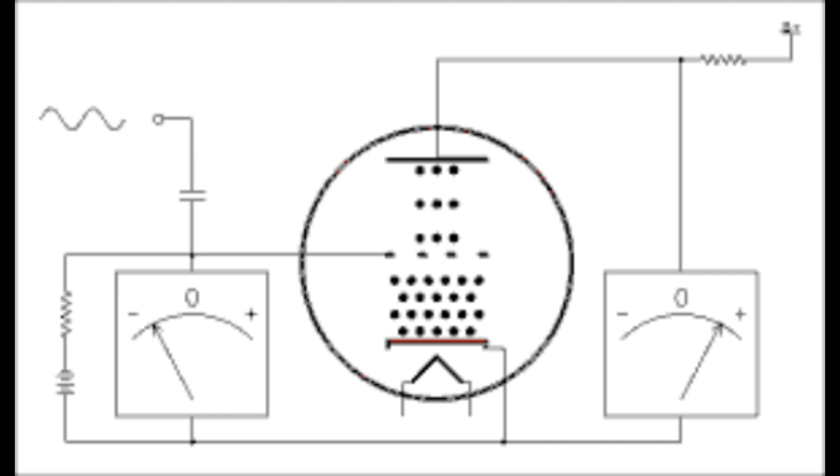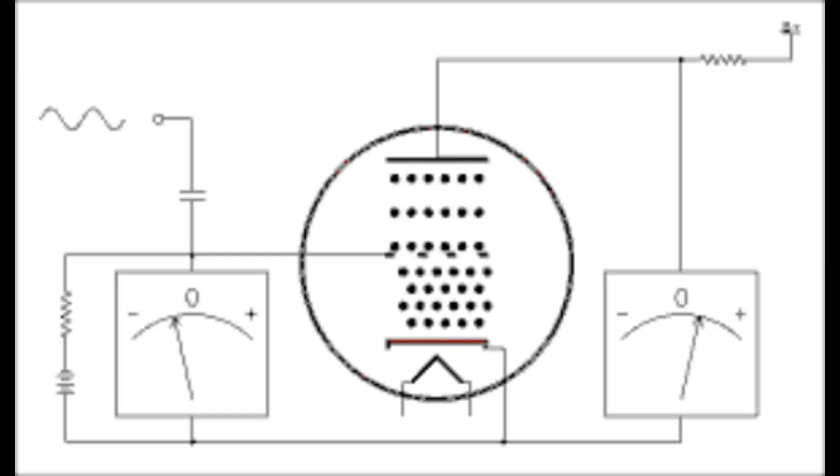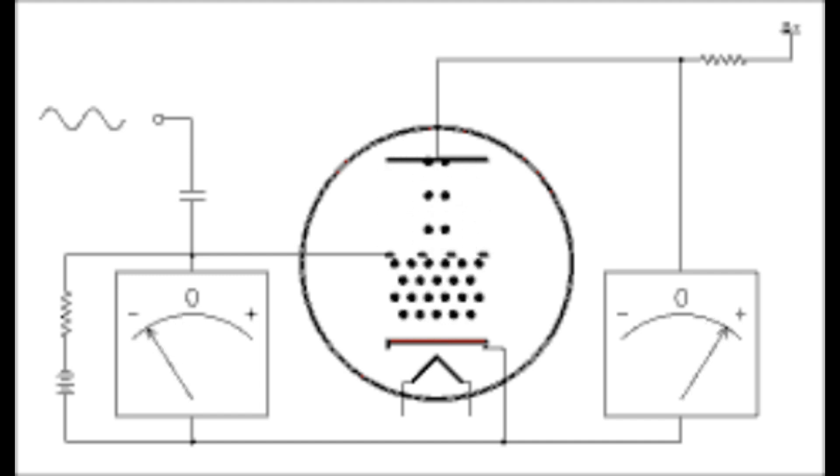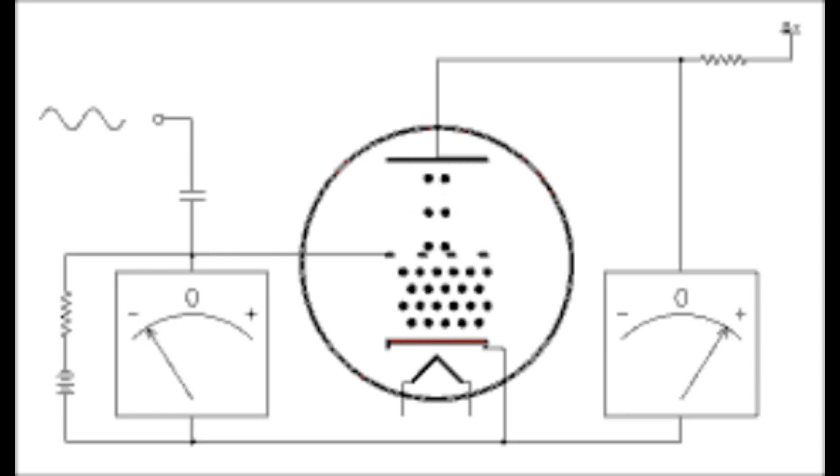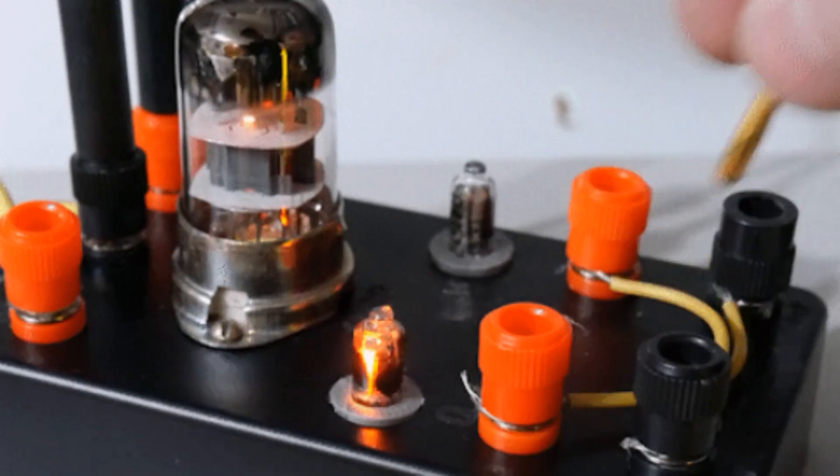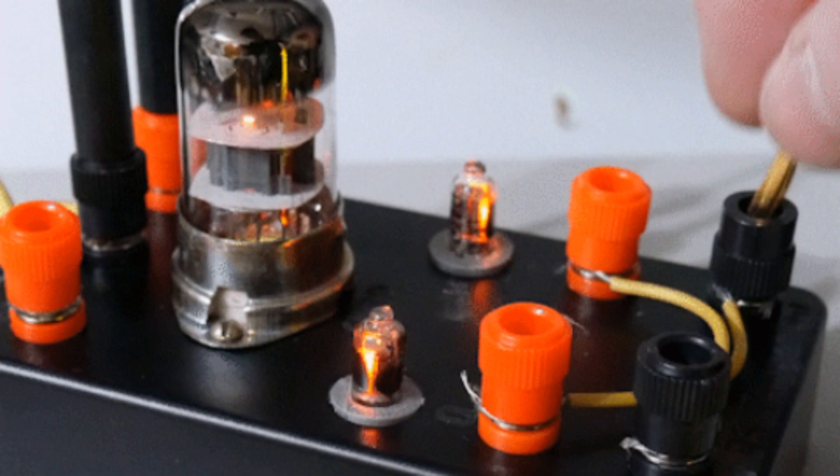But it was the audacious Lee de Forest who dared to dream beyond the confines of existing knowledge. In 1906, he introduced the world to the Audion, a triode vacuum tube that could amplify signals, setting the stage for a technological revolution.